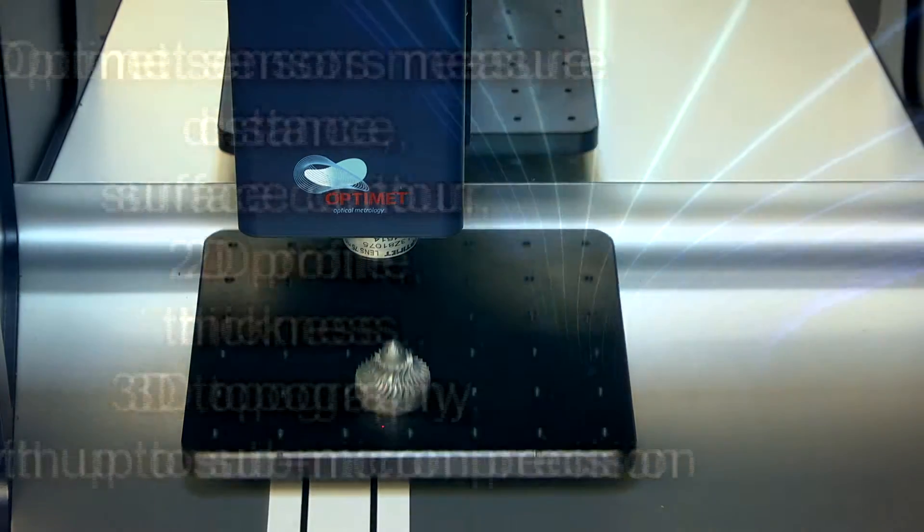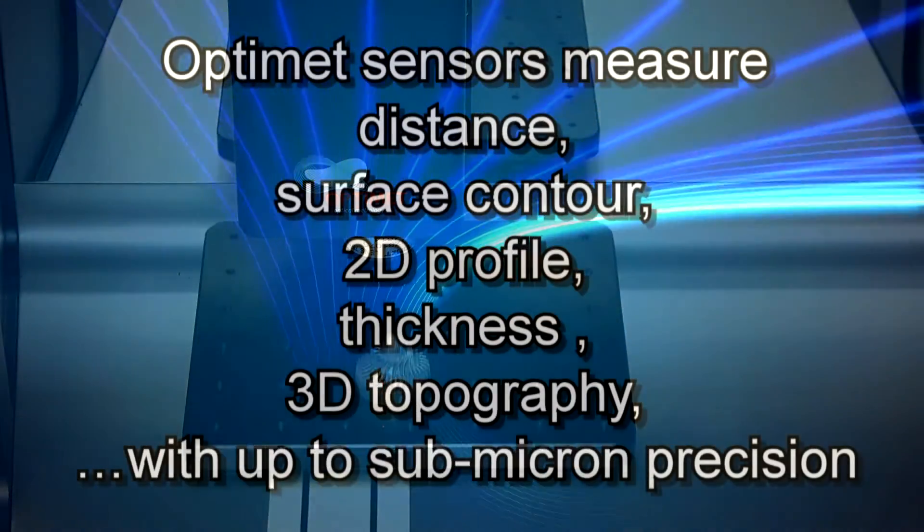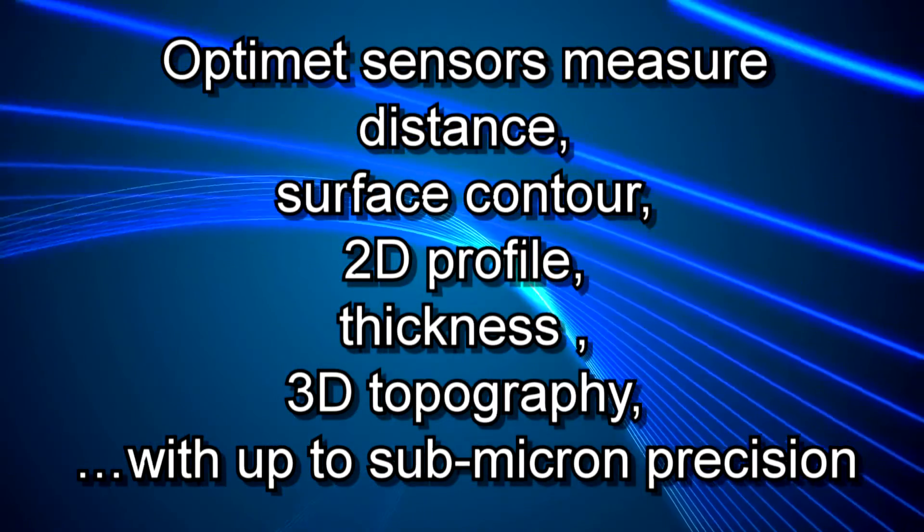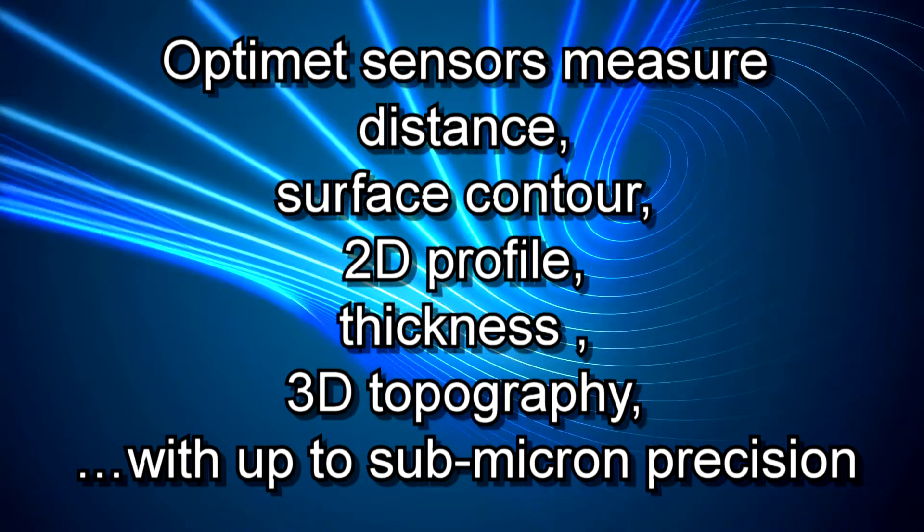OptiMet sensors measure distance, surface contour, 2D profile, thickness, and 3D topography with up to submicron precision.